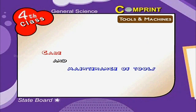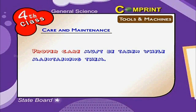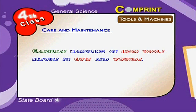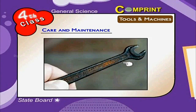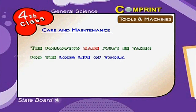Care and maintenance of tools. Almost all tools are made of iron or wood, and proper care must be taken while maintaining them. Careless handling of iron tools results in cuts and wounds. Iron tools rust in the presence of moist air. Wooden tools are eaten away by rats and white ants.